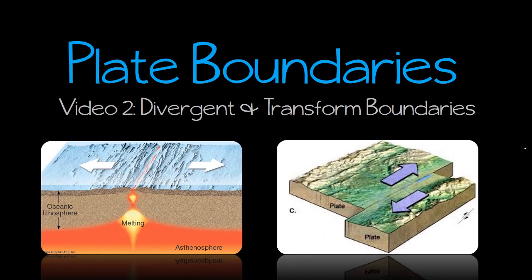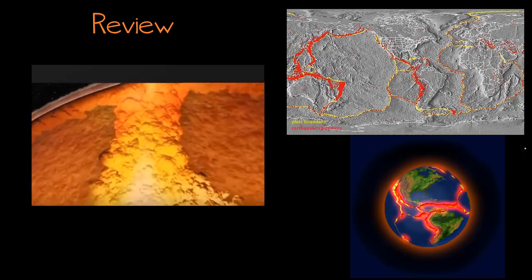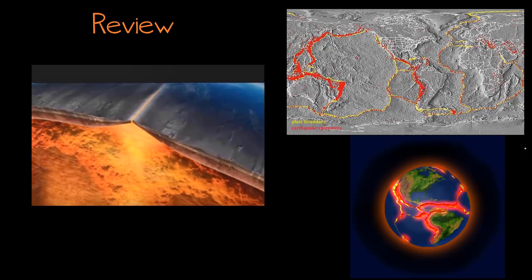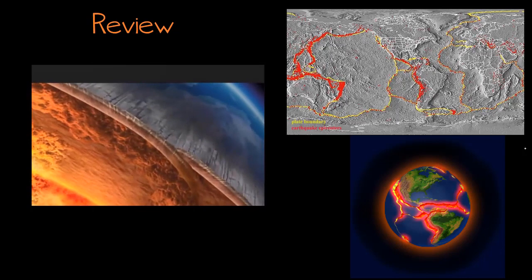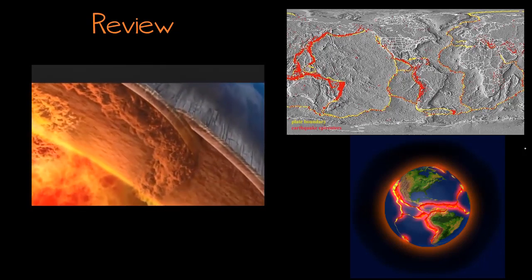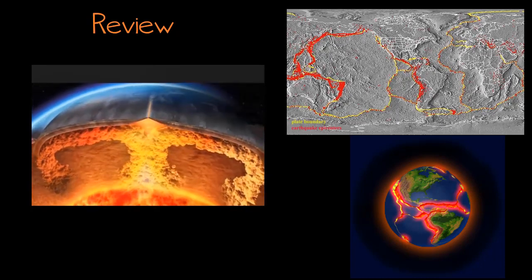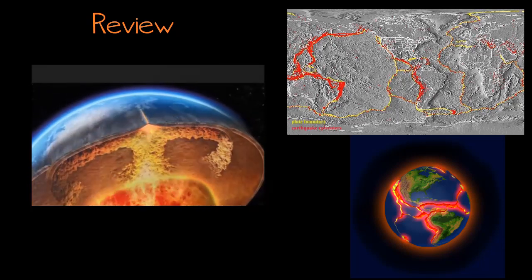Hi everybody, it's Ms. Dupree. In this lesson, we're going to continue learning about tectonic plates. In our first video, we reviewed the fact that the tectonic plates, which are floating on top of the asthenosphere, are constantly moving. It's very slow movement, but it's enough to cause big changes on Earth's surface. We also talked about the fact that most geologic activity, like earthquakes and volcanoes and mountains, happen at the edge of plates, because this is where two or more plates come into contact.